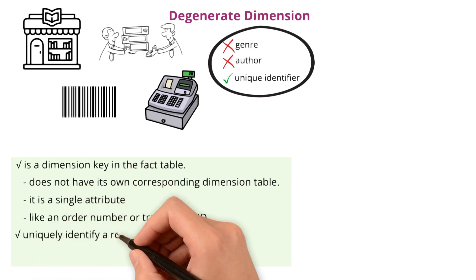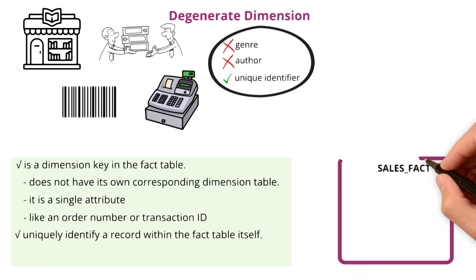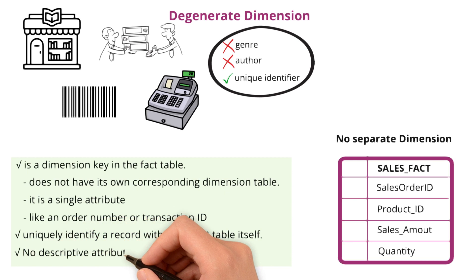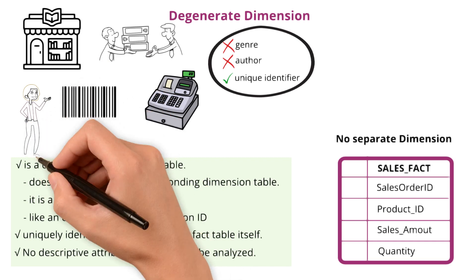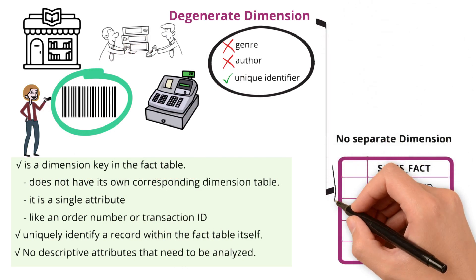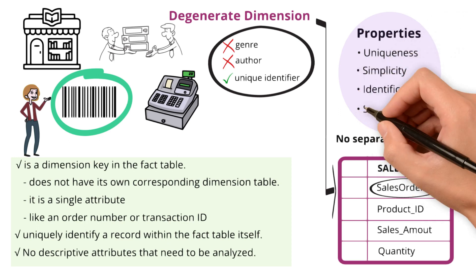It is used to uniquely identify a record within the fact table itself. For example, in a sales fact table, you may have a sales order ID, which is unique to each sale transaction. It does not need a separate dimension table because the order ID itself doesn't have descriptive attributes that need to be analyzed — it's simply a unique identifier for each transaction. Like a unique barcode on a book, these unique identifiers help you pinpoint a specific transaction within a vast collection of data. The properties of degenerate dimensions are: uniqueness, simplicity, identification, and space saving.